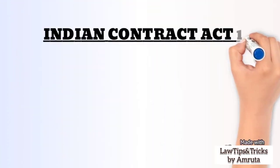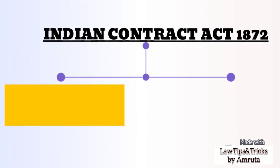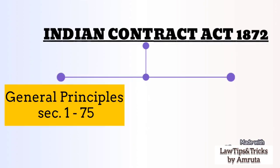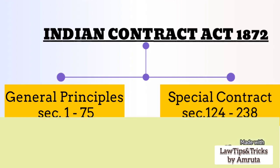First, you should know that the Indian Contract Act is divided into two parts. First, General Principles from section 1 to 75. Second, Special Contract from section 124 to 238.